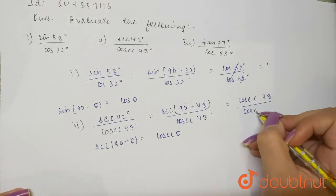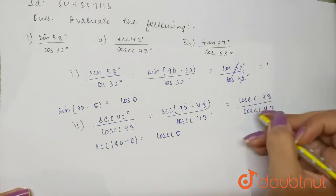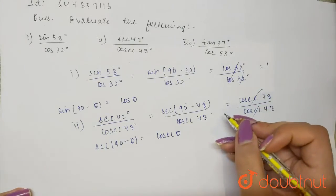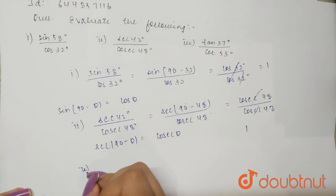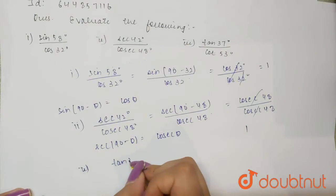divided by cotangent 53°. I can also write this as tan of (90 - 53)° divided by cotangent